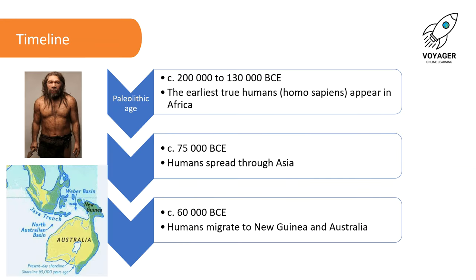Let's get into the main part of our lesson today. We're going to begin by looking at a timeline to give you some idea of what happened and when. When paleontologists, scientists and historians look at the history of early man, they usually start in what's called the Paleolithic Age, or the Old Stone Age, which is what we're looking at today.